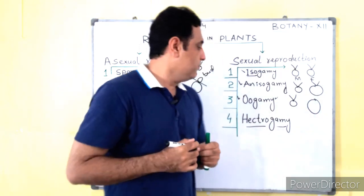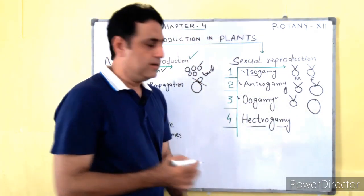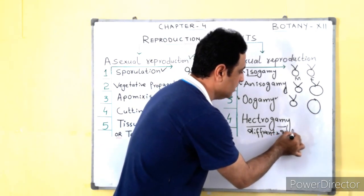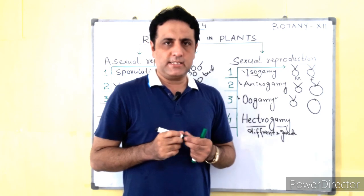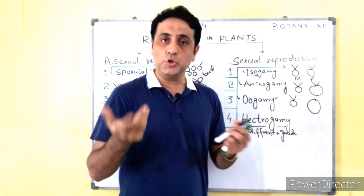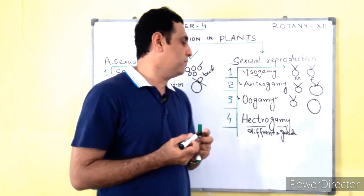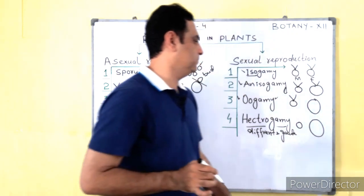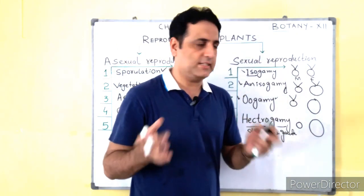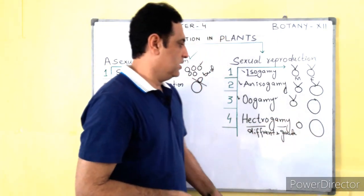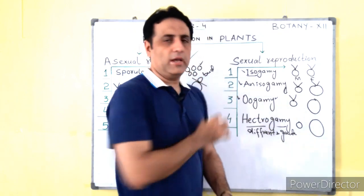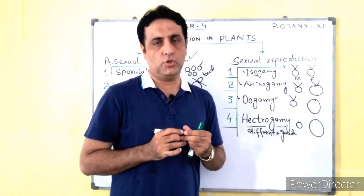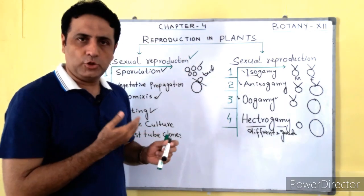Now talking about heterogamy: hetero means different, gamete means gametes. Heterogamy takes place in advanced types of plants like angiosperms, gymnosperms, bryophyta, and pteridophyta, in which the male gamete is smaller without flagella and the female gamete is larger without flagella. Heterogamy is the example of advanced type of plants because flagella is not present. If you examine oogamy and heterogamy, to some extent they resemble each other, but heterogamy always takes place in higher plants.